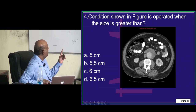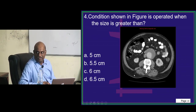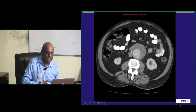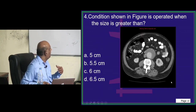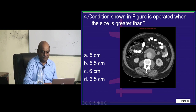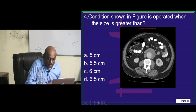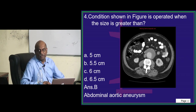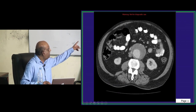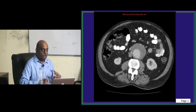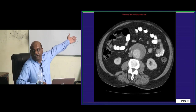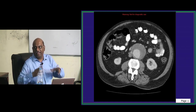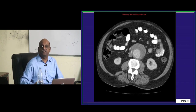The condition shown in the figure becomes operable if it is greater than what size? What is the diagnosis on the CT scan, and beyond what size do you operate? Everyone is proposing 5.5 — absolutely right. It is an aortic aneurysm. Elderly people with atherosclerosis may have one incidentally on ultrasound, but surgery is only indicated when the size is more than 5.5 centimeters.